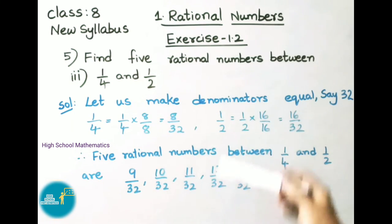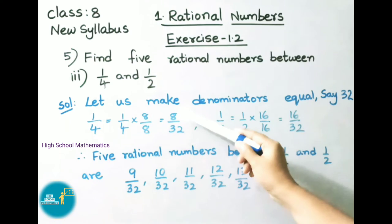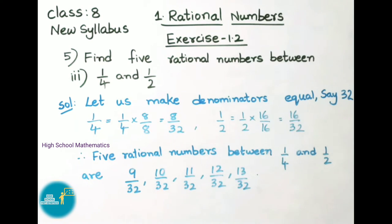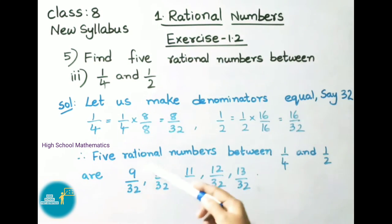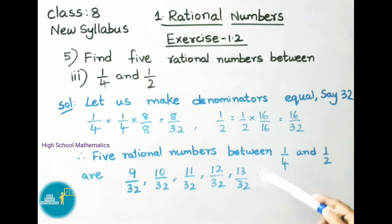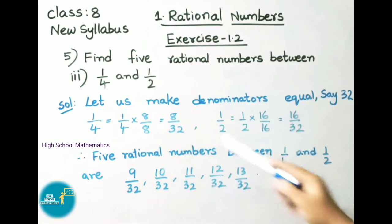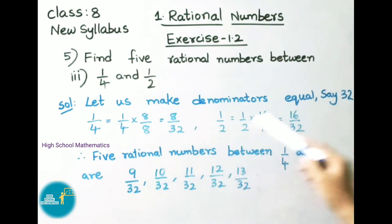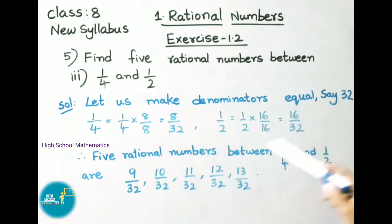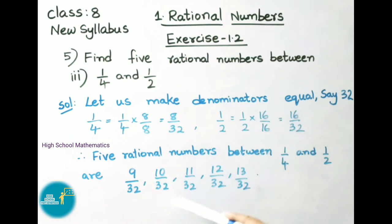So between 8/32 and 16/32 we shall take any 5 rational numbers. Therefore 5 rational numbers between 1/4 and 1/2, or equivalently 8/32 and 16/32, are: 9/32, 10/32, 11/32, 12/32, and 13/32.